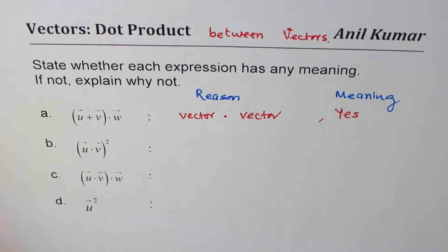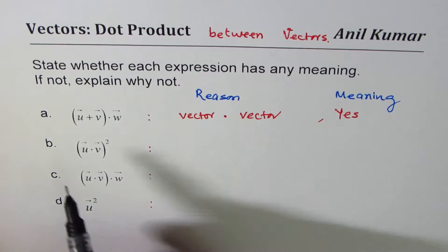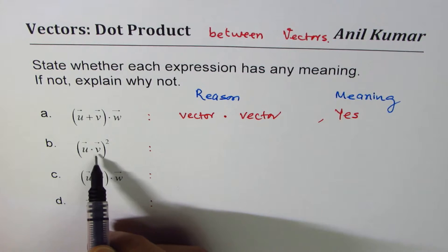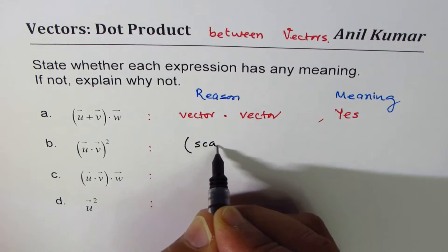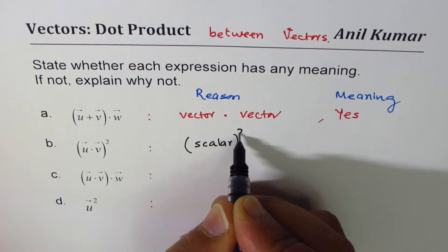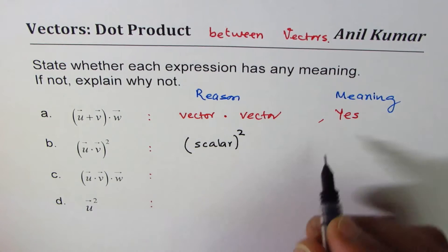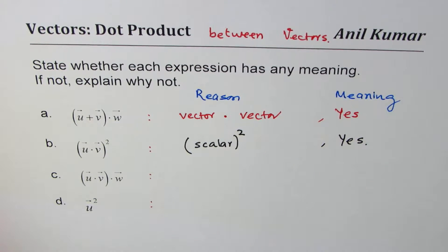And then whether it has meaning or not. Yes. Now we are having dot product. Dot product results in a scalar. So that means we are checking scalar, and then square. Now scalar square has meaning, so we'll say yes.